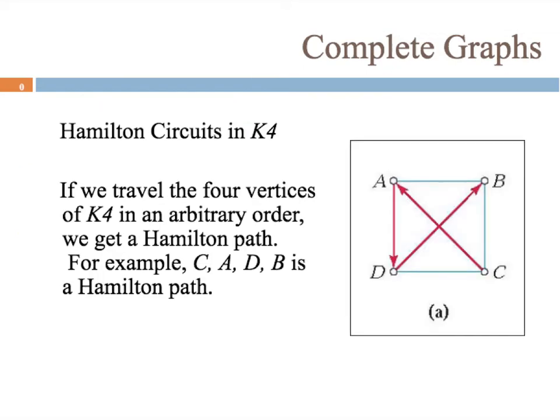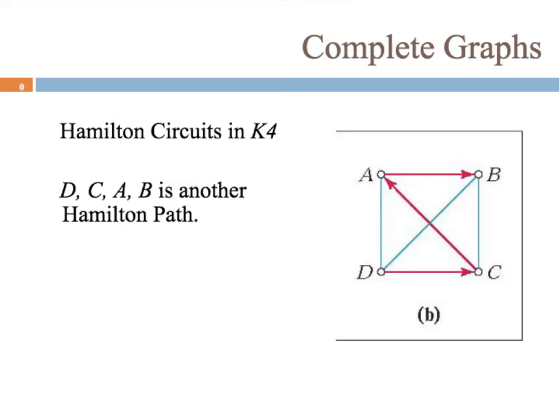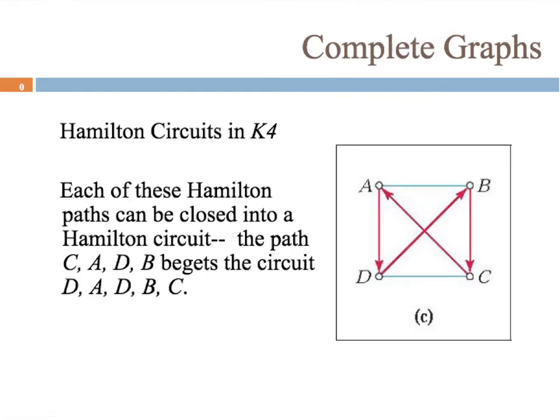Here's an example. A Hamilton circuit in K4 — this is a complete graph where every vertex is connected to every other vertex. If we travel the four vertices of K4 in an arbitrary order we get a Hamilton path. For example, starting at c we can go c, a, d, b — we've gone through all the vertices. Another example: d, c, a, b.